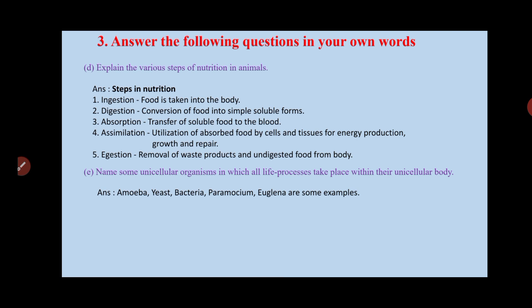The fifth process is egestion — the removal of waste products and undigested food from the body. In this process, food which is not needed by the body and waste products are expelled from the body. The next sub-question asks us to name some unicellular organisms in which all life processes take place within their unicellular body.